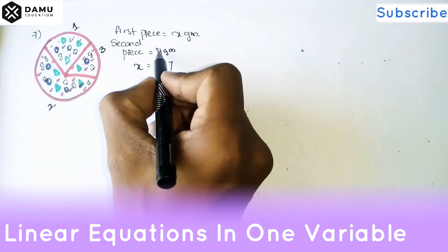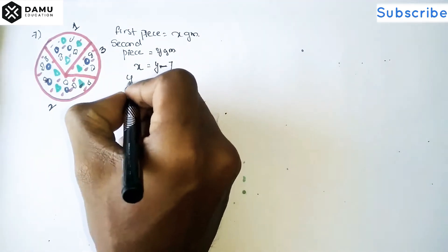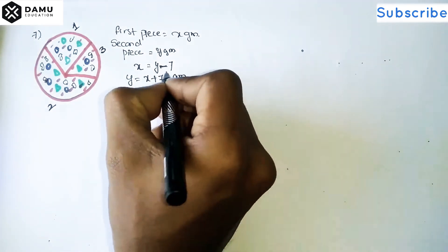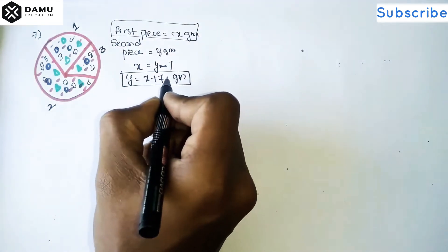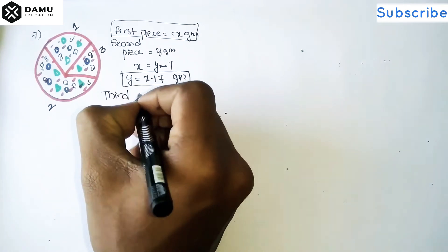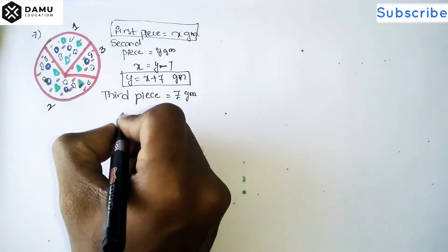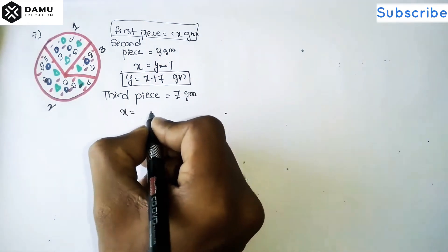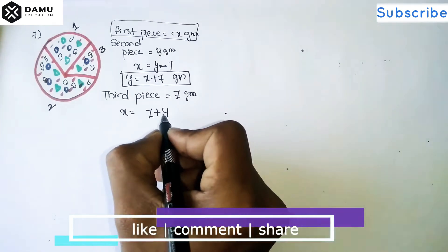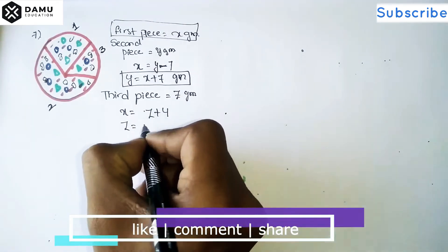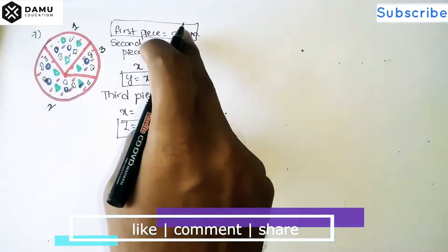Then the second piece will be y. Since the first piece is seven grams lighter, we subtract from the second piece — so second piece weight will be x plus seven grams. First piece weight is x grams, second piece weight is x plus seven grams. Third piece: since the first piece is four grams heavier than the third piece, third piece weight will be x minus four grams.